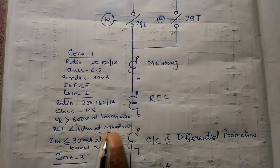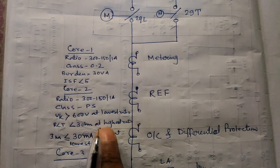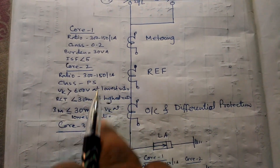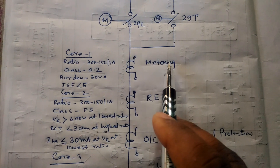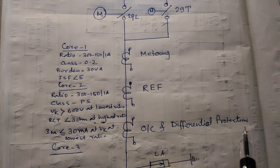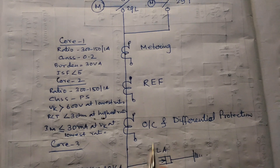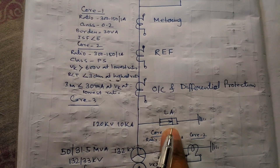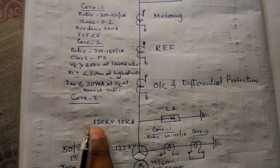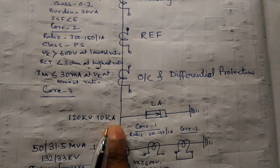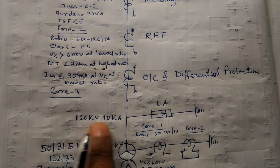We use a CT of three cores, 300/150/1 ampere, Class 0.2, burden 30 VA, 2PS cores. The first core is for metering, the second is for REF protection, and the third is for overcurrent and differential protection. Lightning arrestors are used on the 132 kV line side.